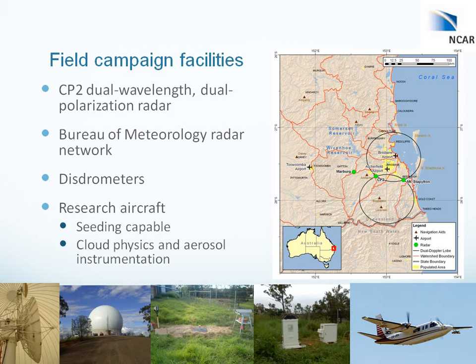For the field campaign, we had a variety of innovative facilities available. We had the CP2 dual-wavelength dual-polarization radar, located just to the southwest of Brisbane. We also had the Bureau of Meteorology Radar Network radars available. The two closest were the Mount Stapleton radar along the coast and the Marburg radar further inland. The Mount Stapleton radar was a Doppler radar, and we had dual-Doppler coverage areas outlined by black circles.